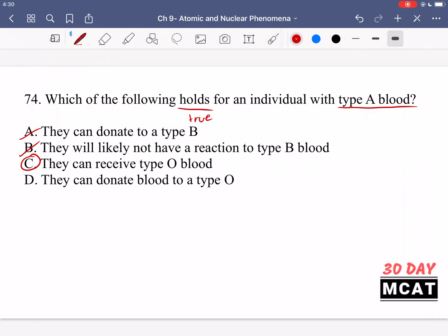But option D is saying they can donate blood to type O. That's incorrect. Type O can only receive also type O. Type O has antibodies against type A and B and also AB, of course, and therefore it cannot receive type A blood. So D is also incorrect.